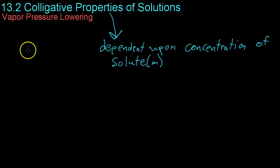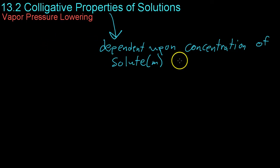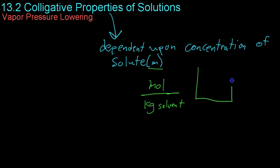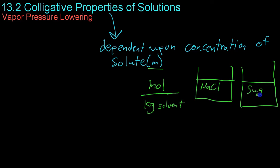This video is going to be dealing with Chapter 13, Section 2, which is the colligative properties of solutions. Colligative properties are properties of a solution that are dependent upon the concentration of solute, usually given in molality, which is moles per kilogram of solvent. The important thing about colligative properties is that they apply to all solutions — a solution of salt water will exert colligative properties just as a solution of sugar will. The solute is not what matters; rather, the concentration of the solute is the important factor.